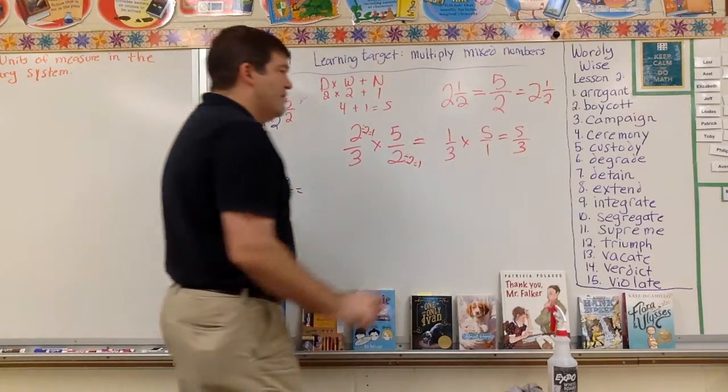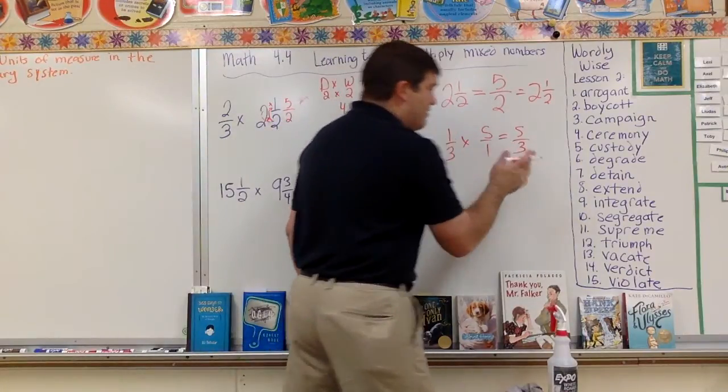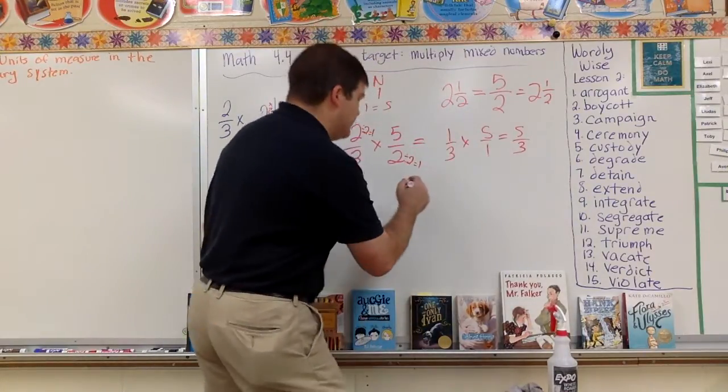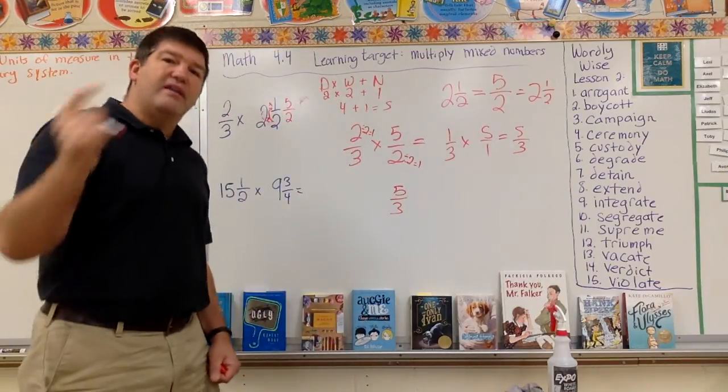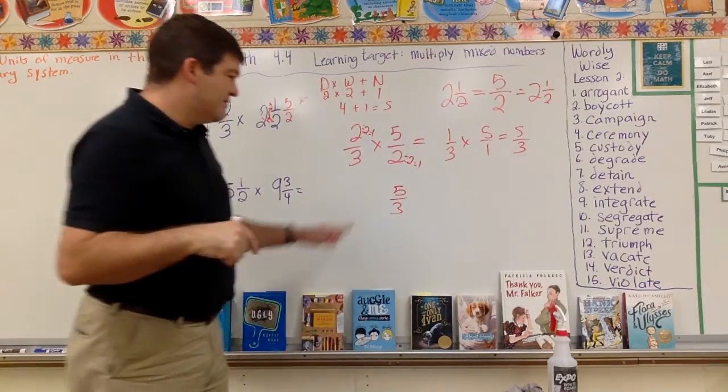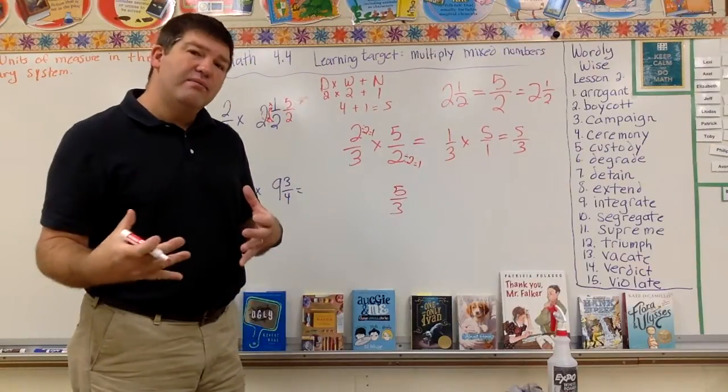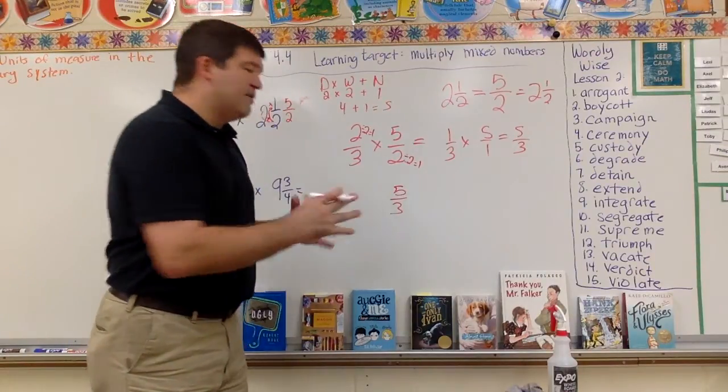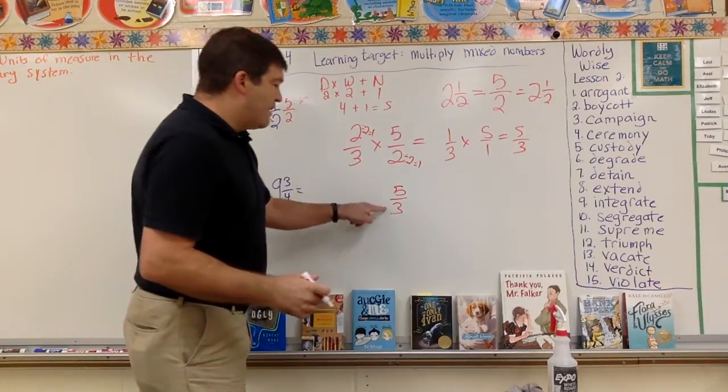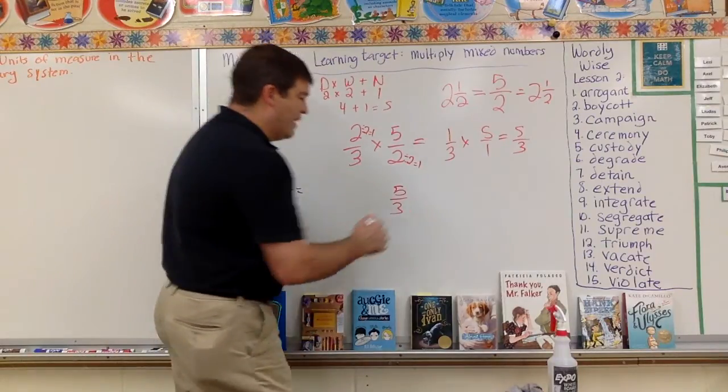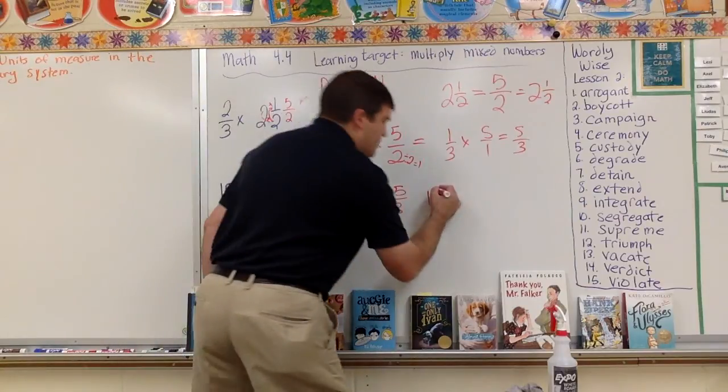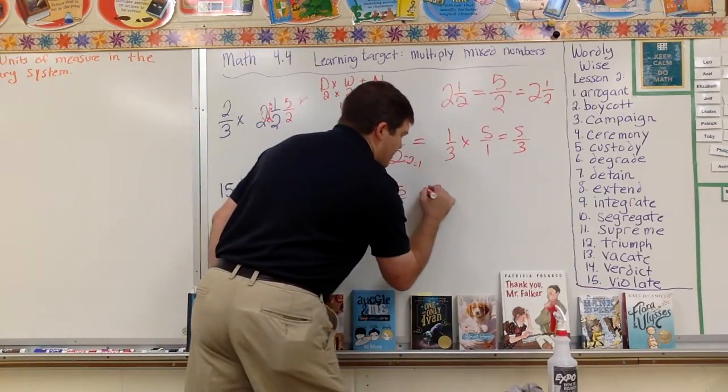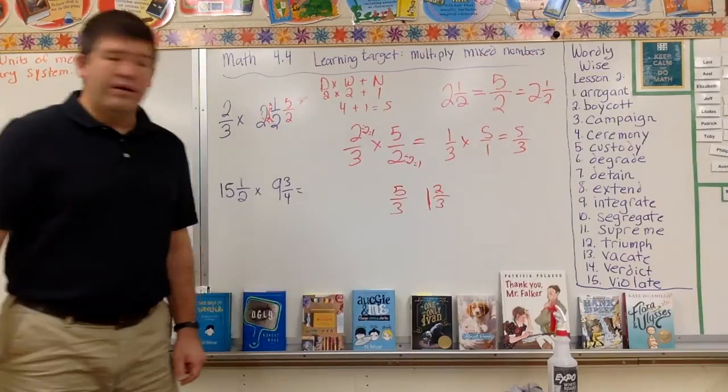Mixed number. So I ask myself, I can either do the division. I'm going to do this two ways. Five thirds. I want to get that back into a mixed, because improper, I don't like to end with an improper. So now I've got to get it back into a mixed. I could say, how many times does three go into five? One time, and then there's two left.